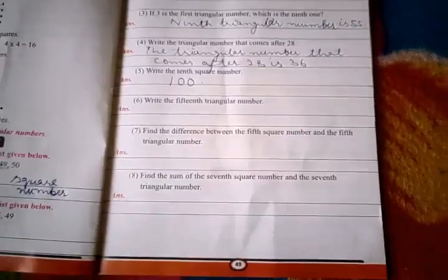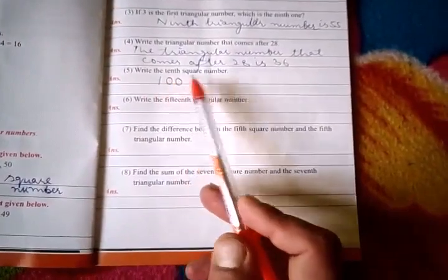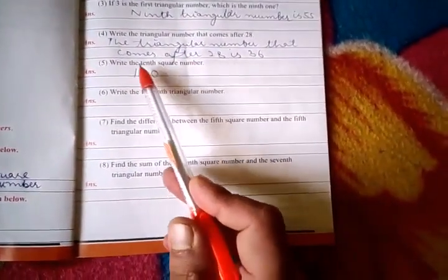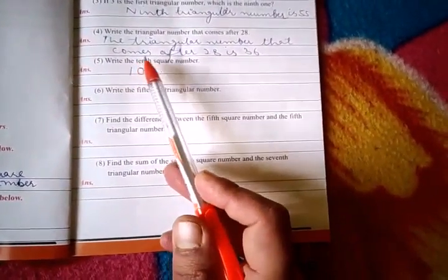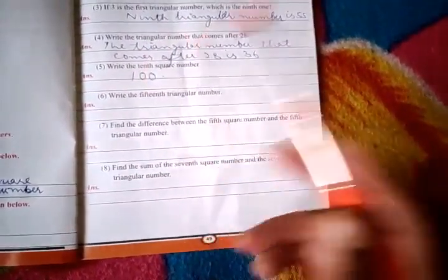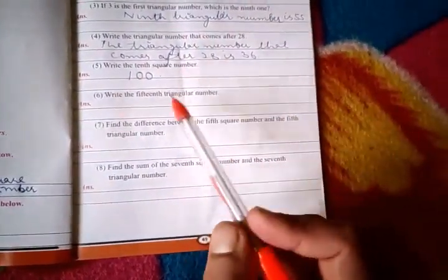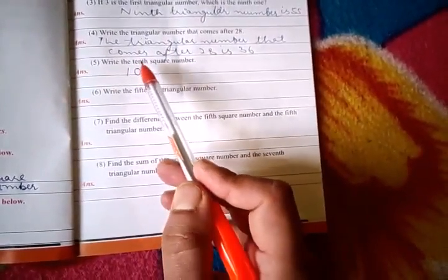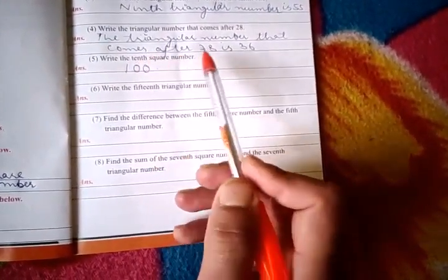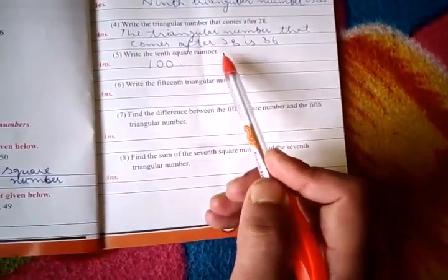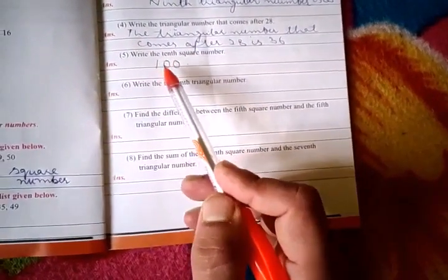Write the 10th square number. We have to find the 10th square number. The formula for a square number is n × n. Here n is 10, so we multiply 10 with 10. 10 times 10 is 100, so the 10th square number is 100.